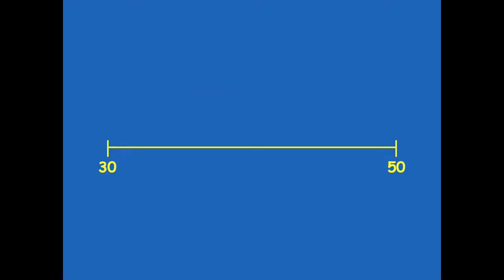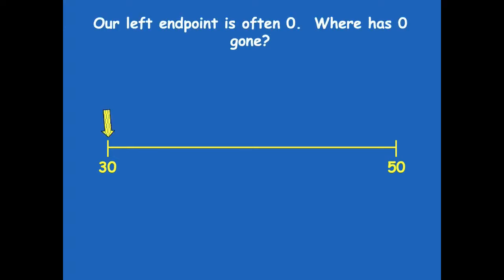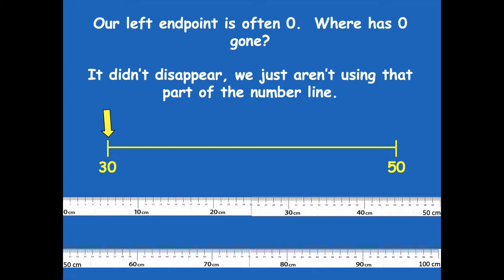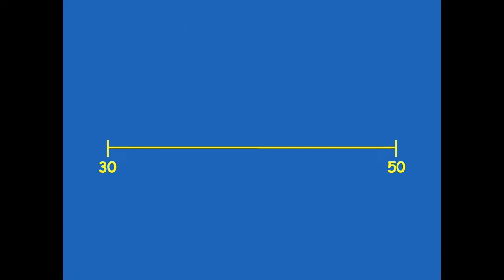Our left endpoint is often zero — where has zero gone? Well, it's still there, just farther back. We're just not showing that part on our number line. It didn't disappear; we just aren't using that part. If we look back here, zero is still there — we just zoomed in on the part that's 30 centimeters and 50 centimeters.